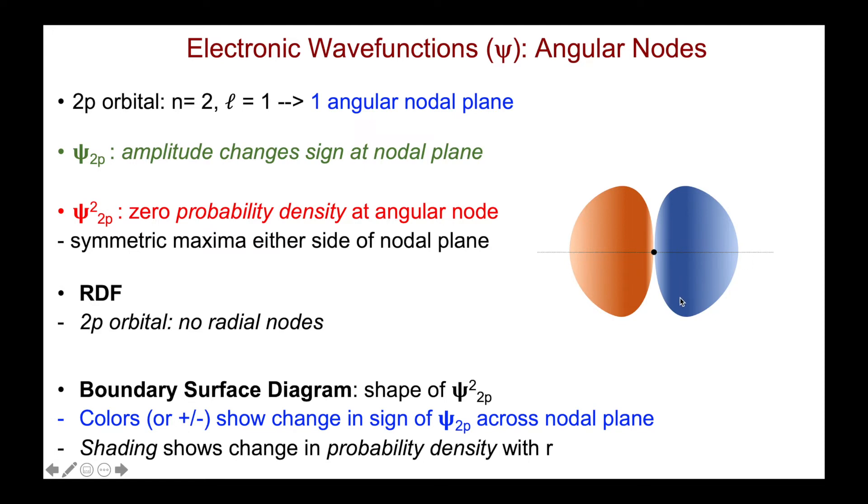My BSD will show two things, the shape of the orbital, and by adding colors or positive and negative signs, I can show the change in phase of psi across any nodal planes, in this case, an angular node.